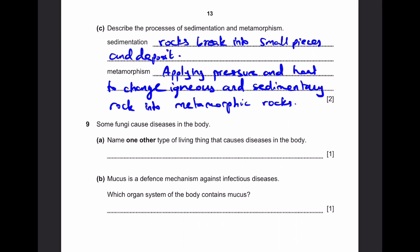Question 9. Some fungi cause diseases in the body. Part A. Name one other type of living thing that causes diseases in the body. Of course, the most obvious is viruses, but the one which is more common is bacteria. Part B. Mucus is a defense mechanism against infectious diseases. Which organ system of the body contains mucus? Mucus is secreted by the nose so that it can trap dust particles or any infectious particles, for example, infectious bacteria which cause diseases. So the organ system is the respiratory system.